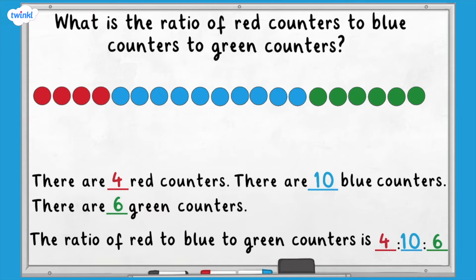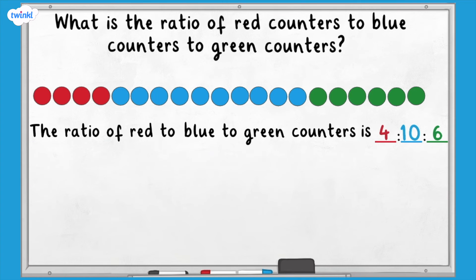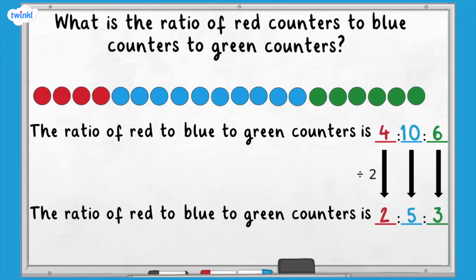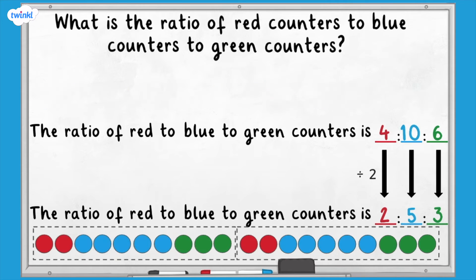We can simplify this ratio in the same way as we would simplify a fraction. The numbers four, ten and six are all even numbers, which means they all have two as a factor. We can divide them all by two and still have a whole number. If we do this, we are left with the ratio two to five to three. If we regroup our counters, we can check that this is true. For every two red counters, there are five blue counters and three green counters.